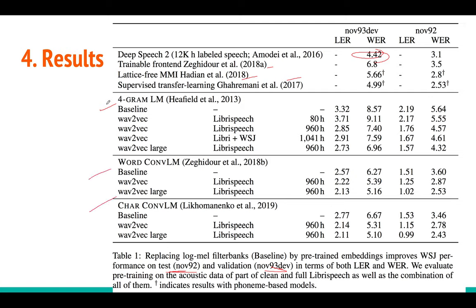LER (letter error rate) is best for the character convolutional model but not much different from the classical 4-gram or n-gram based language model — it's a very small difference. These are the datasets used for pre-training. Wave2vec pre-training uses various amounts of data, and wave2vec large uses the full 960 hours of audio data. You can look through the more detailed results table in the paper.